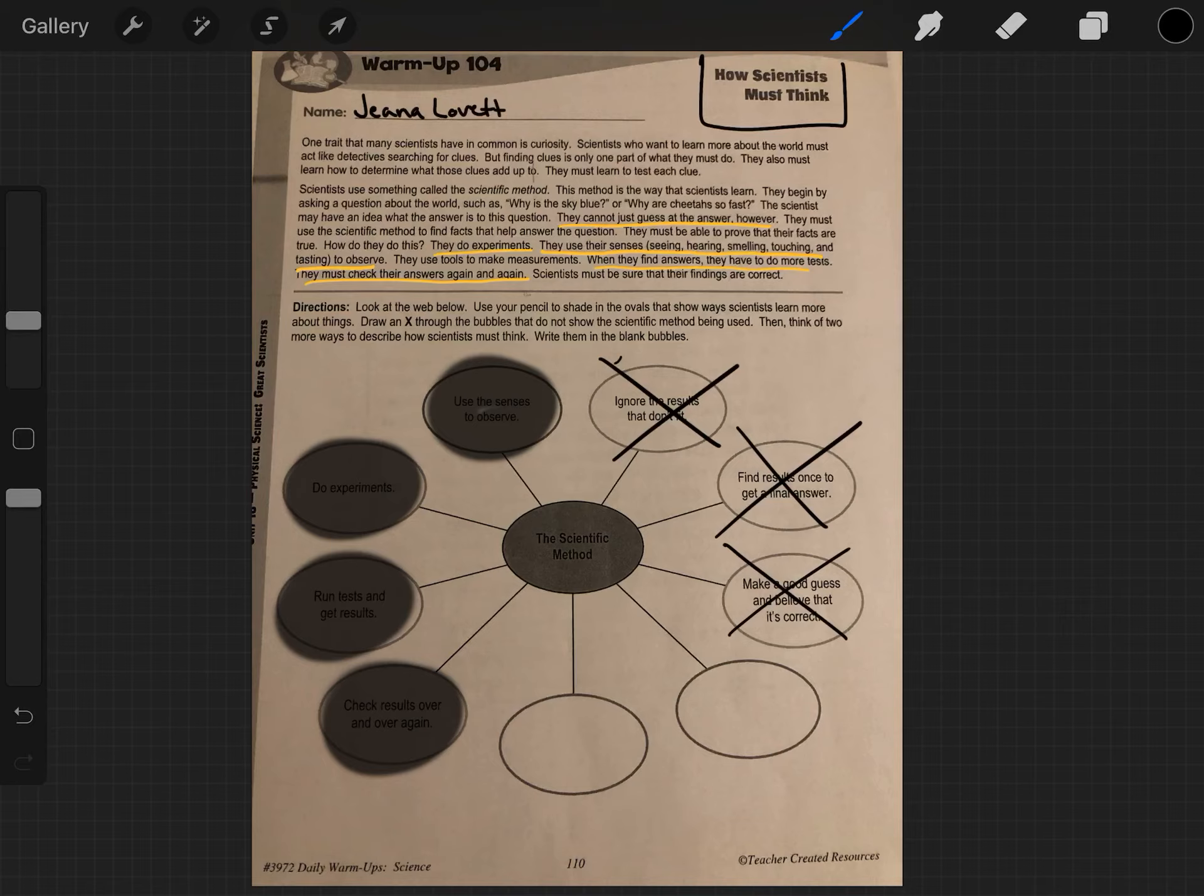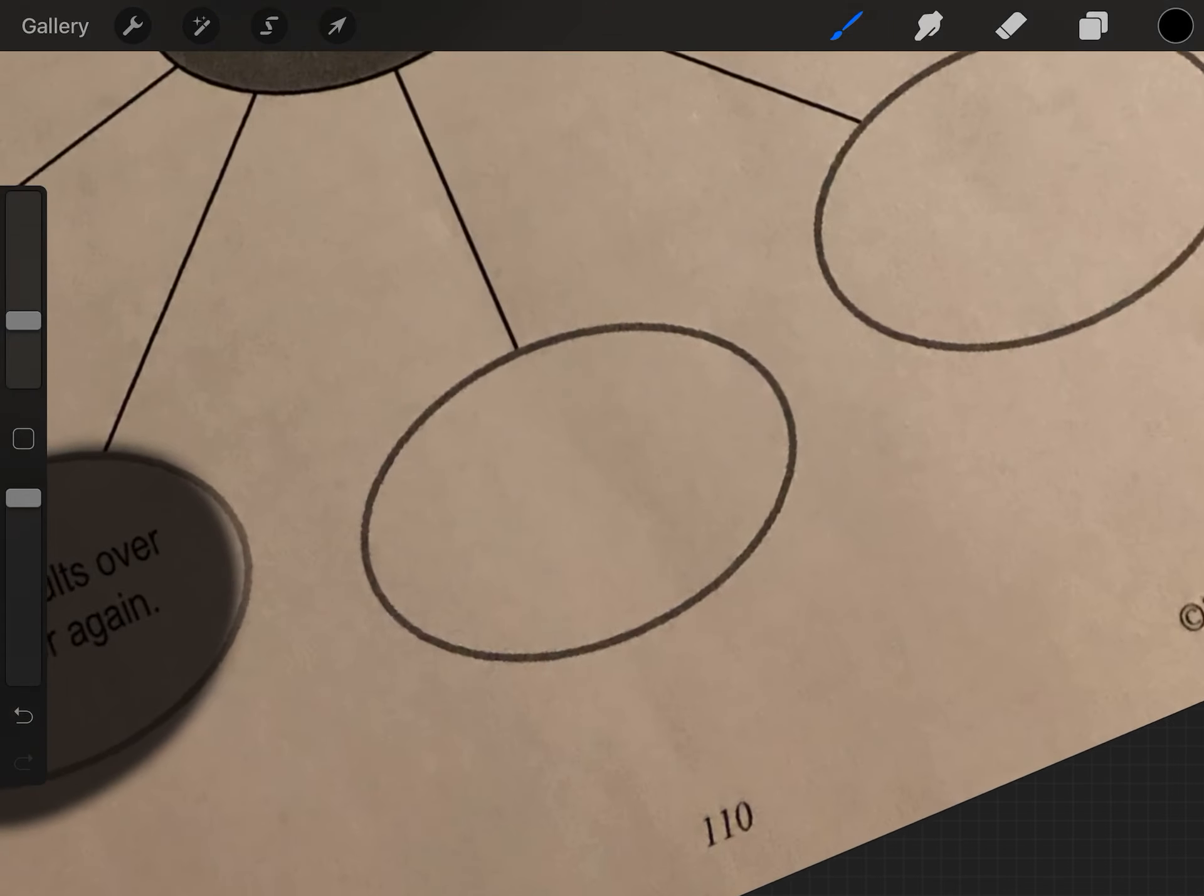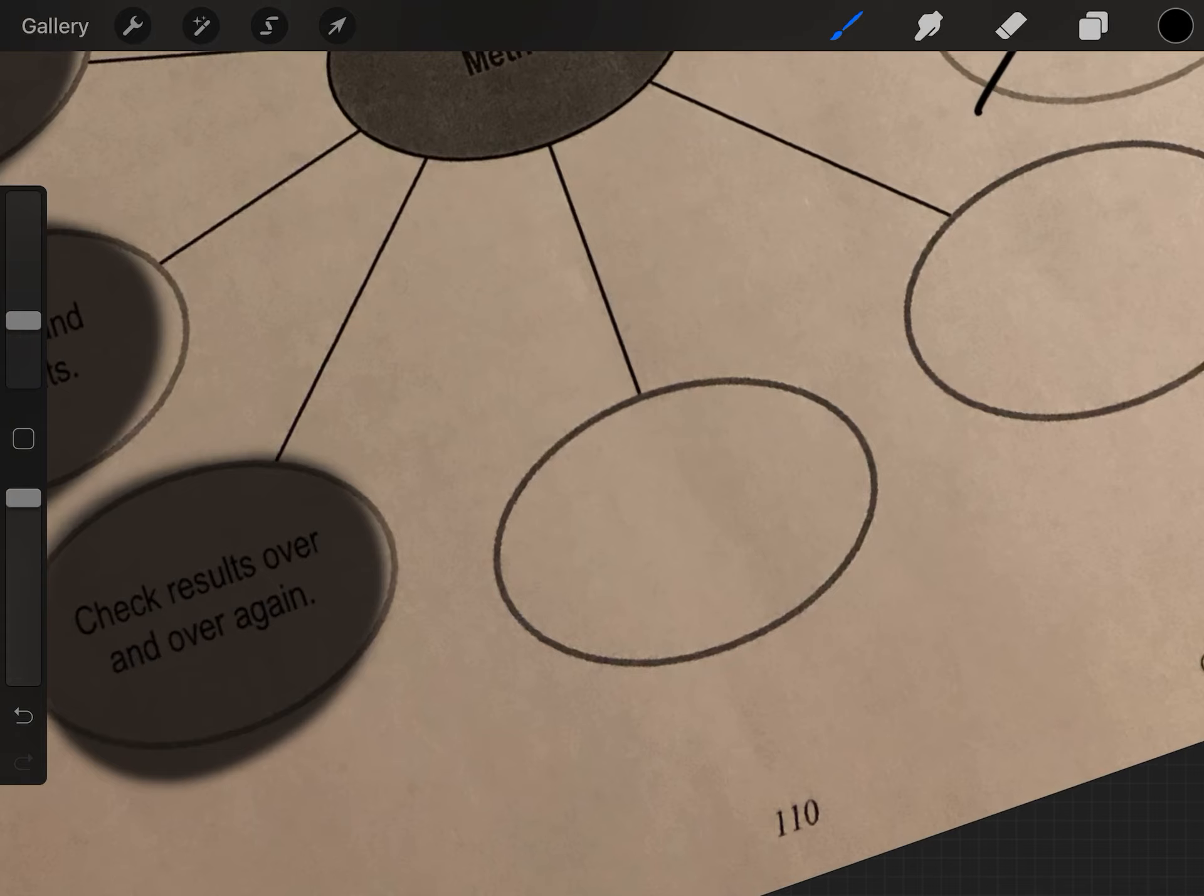Now we get to the final ones where we have to think of two more ways to describe how scientists must think. Write them in blank bubbles. Okay, so what else have we mentioned? Okay, they begin to ask... Let's see. Question. Oh, that was weird. Question. World. Around them.